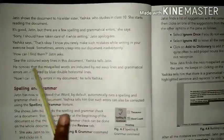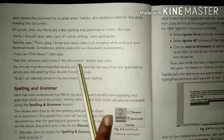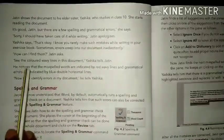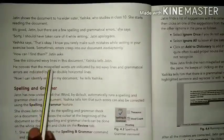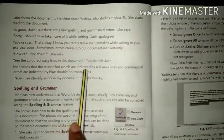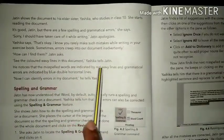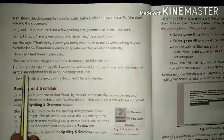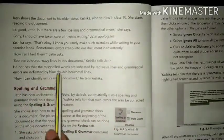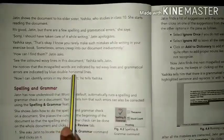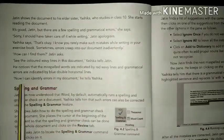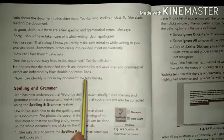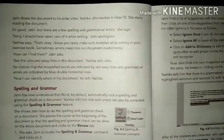See the colored wavy lines in this document, Yashika tells Jatin. She notices that the misspelled words are indicated by red wavy lines and grammatical errors are indicated by blue double horizontal lines. Now I can identify errors in my document, he tells Yashika.